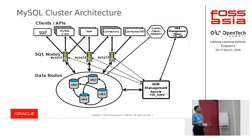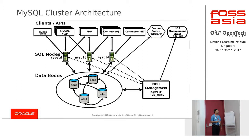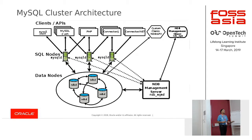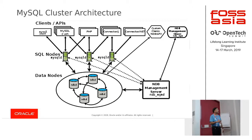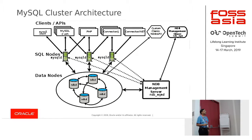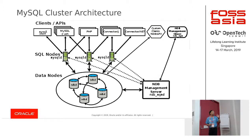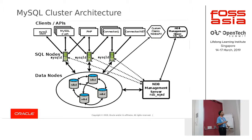There are four NDBD processes (NDBD 1, 2, 3, 4) in this four-node cluster example. These are the heart and soul of the cluster — they store the actual data, indexes, and node logs. They also perform transactional lookups via primary key. When you perform a query, it determines where the data is stored and which nodes handle it. The SQL nodes are MySQL server nodes; in this example there are three, but you can have many. The MySQL server layer performs queries like CREATE DATABASE, CREATE TABLE, stored procedures, events, and any SQL queries.